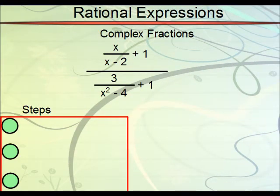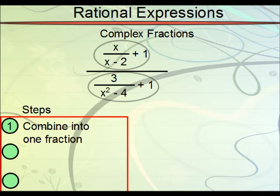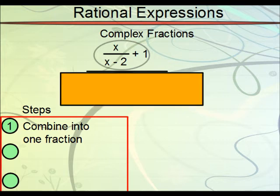So, what about complex fractions like this? What you should note for this is that you have this huge quantity divided by this huge quantity. So, what you really have is just two pieces. So, let's take each piece, this top and this bottom, and let's combine each of them into one fraction.